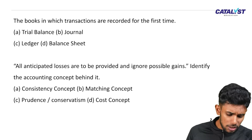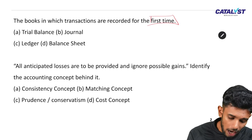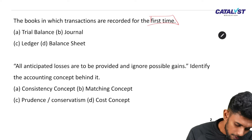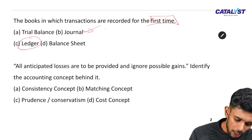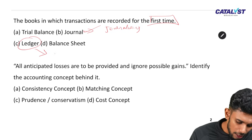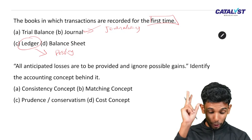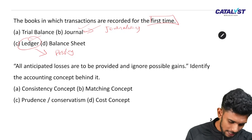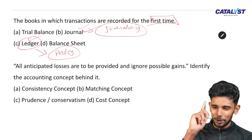The books in which transactions are recorded for the first time are called books of original entry — that is the journal. The process of recording in the journal is called journalizing. The process of transferring entries to the ledger is called posting. These are 4 important things to remember: journal, ledger, journalizing, and posting.